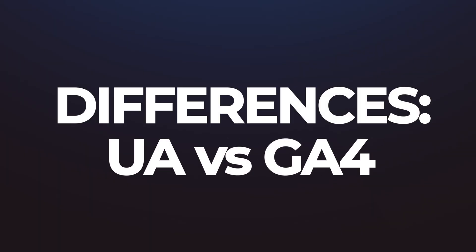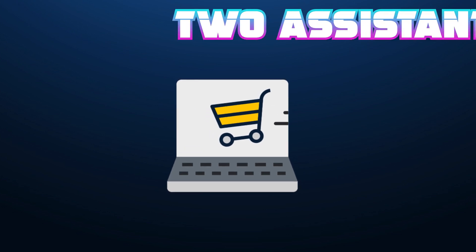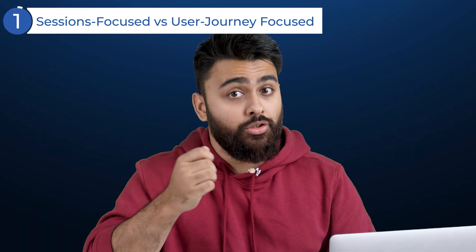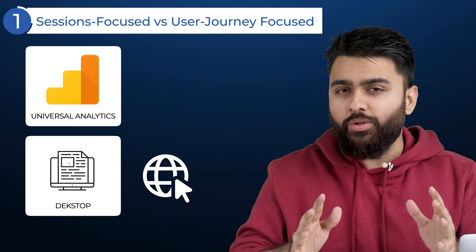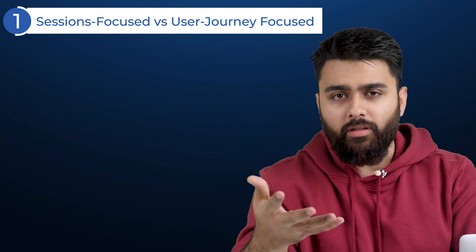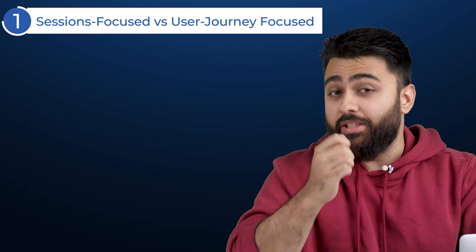So what's changed between UA and GA4? There are four main differences. To make it easier to understand, imagine your website is a digital store and you have two assistants, UA and GA4, that help you track and serve your customers. First: Sessions-Focused vs. User Journey-Focused. UA was created when desktops were the main devices to browse the internet, so it uses a sessions-focused method, which provides many valuable data points but doesn't always give a complete picture of the user's journey. For example, if the same user visited your website from two separate devices, the UA assistant would count him as two separate users. But GA4 has a more user-focused method and combines multiple data points to give you a holistic view of the entire user journey — like recognizing the same customer even if he logs in from multiple different devices.